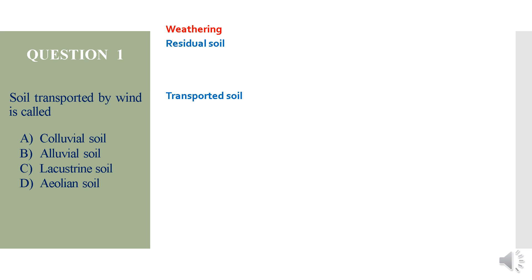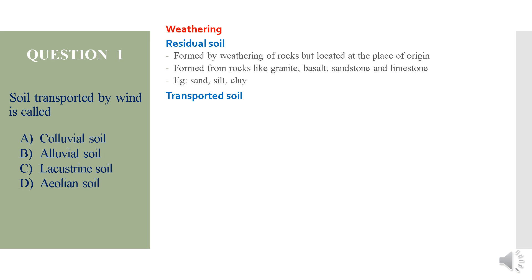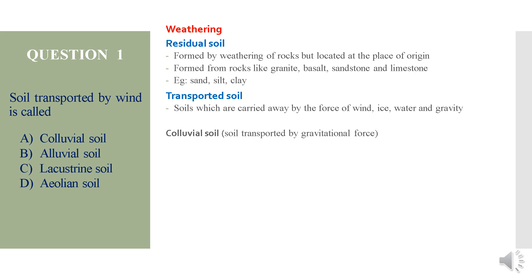The soil obtained due to the weathering process may be residual soil or transported soil. Residual soil is formed by weathering of rocks but the soil remains at the place of origin, formed from rocks like granite, basalt, sandstone, and limestone — examples are sand, silt, and clay. Transported soils are carried away by wind, ice, water, or gravity. Colluvial soil is transported by gravitational force; alluvial soil is transported by running water.